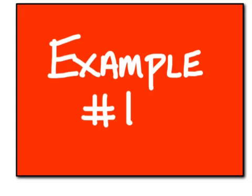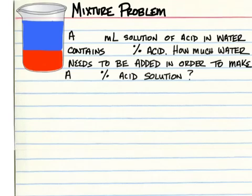Example number one. A 900 milliliter solution of acid in water contains 15% acid. How much water needs to be added in order to make a 9% acid solution?